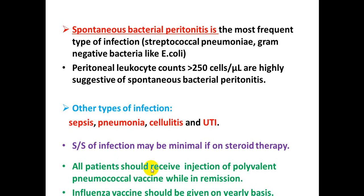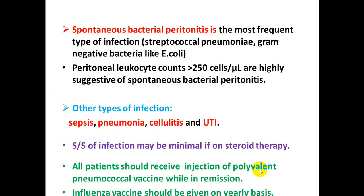All nephrotic patients should receive the polyvalent pneumococcal vaccine while in remission, and should also receive an influenza vaccine on a yearly basis, in order to reduce the risk of infection.